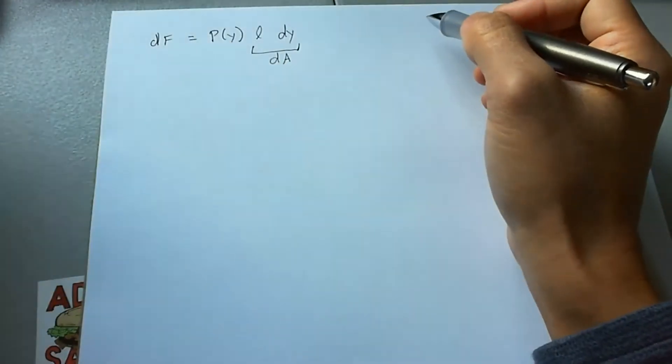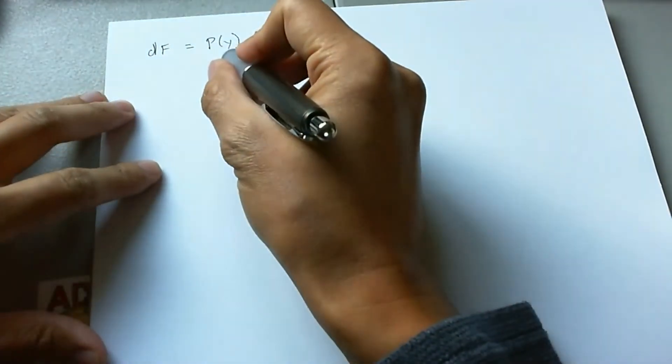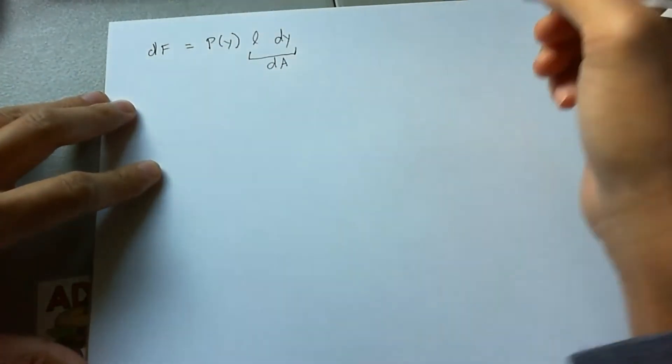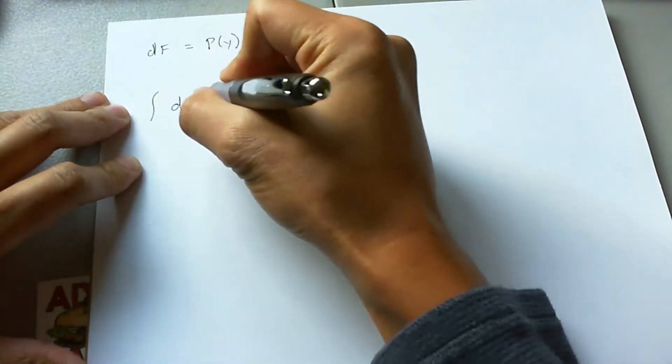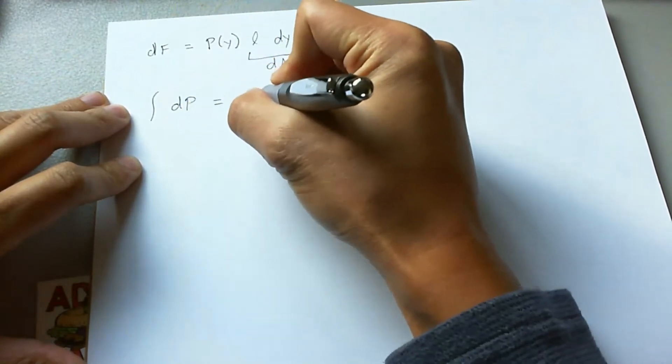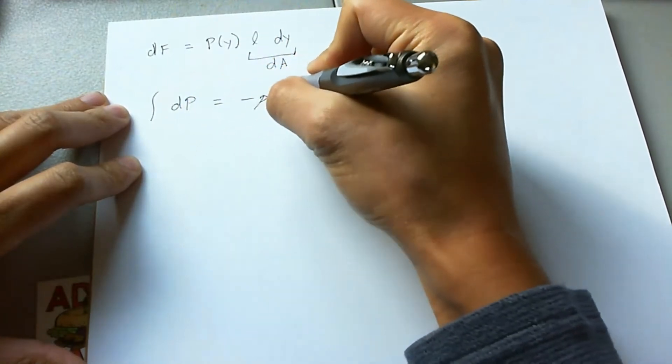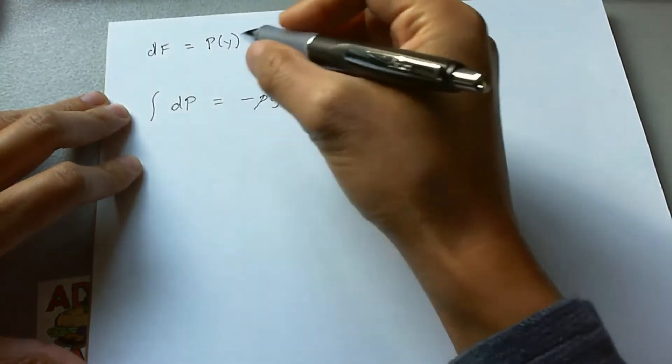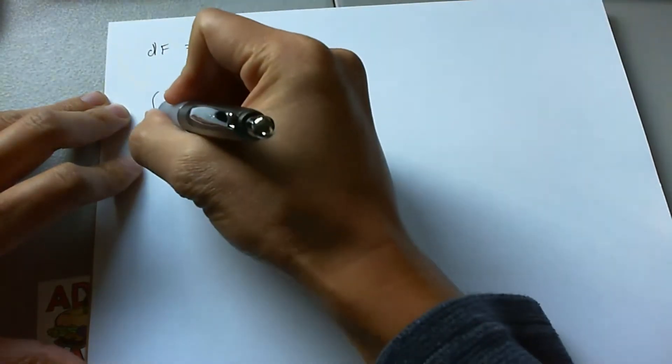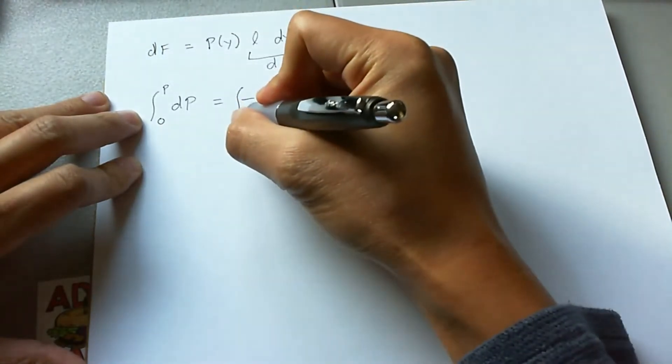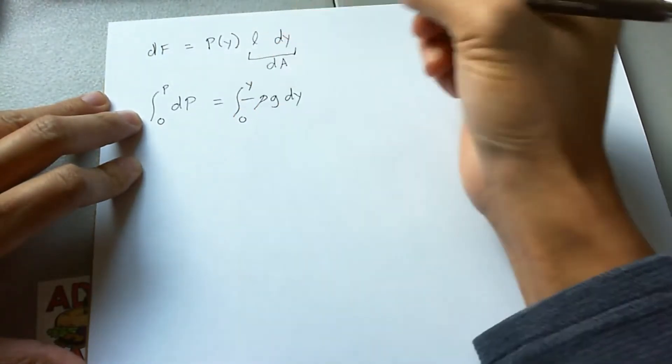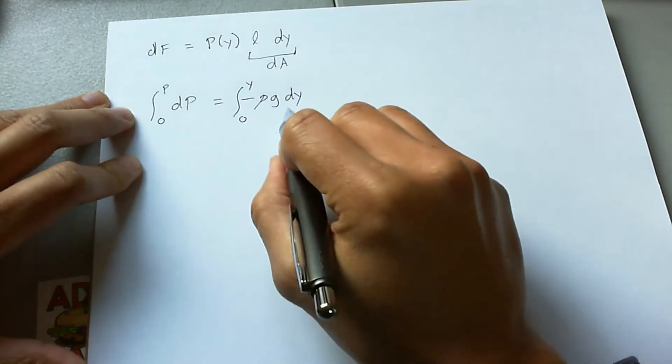So let's also now figure out how we can get P(y). We use the equation dP = -ρg dy. You will take the integral. In order to get from zero pressure to a pressure, you will go a depth of zero to y. So that will give you the pressure in terms of depth y.